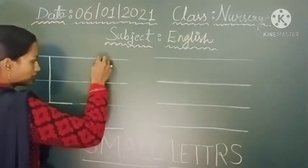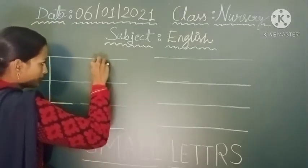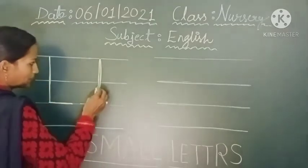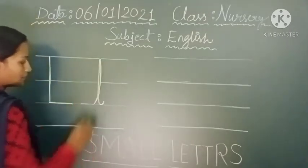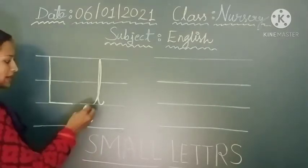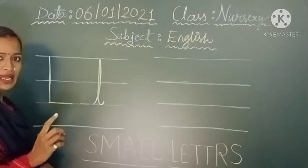Again, turn after one standing line. Okay, see students, let's do this. The small letter L is very easy.